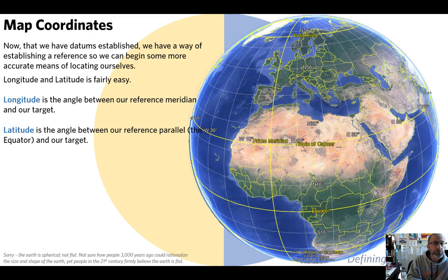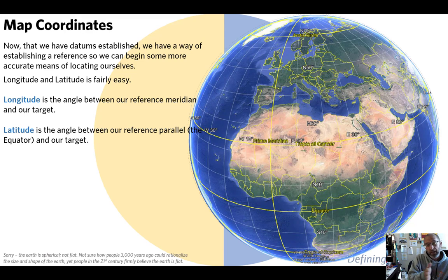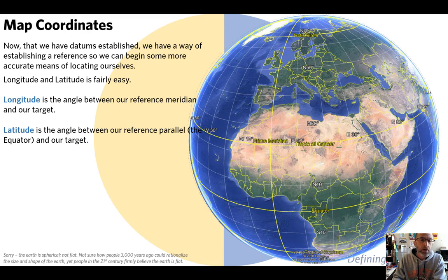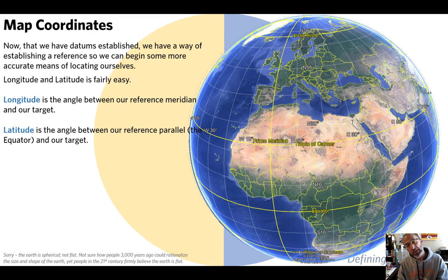Latitude is established from the equatorial reference plane, and longitude is the angle you have to turn from facing the prime meridian to point toward an object on the surface. The western hemisphere is to the left of the prime meridian, the eastern to the right, with the northern and southern hemispheres divided by the equator.